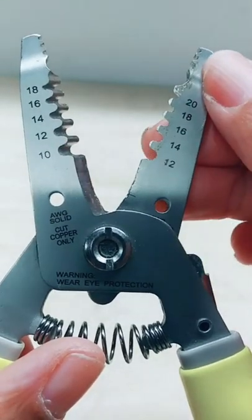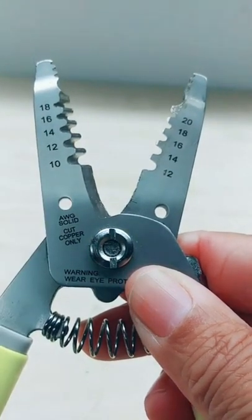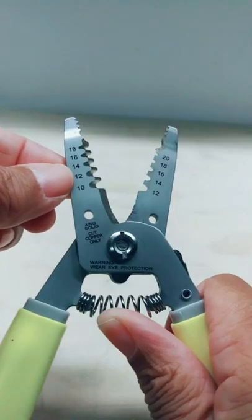Now one side of the strippers is marked for stranded wire and the other side is marked for solid wire. We have 12 gauge wire, so we're going to use the appropriate slot.